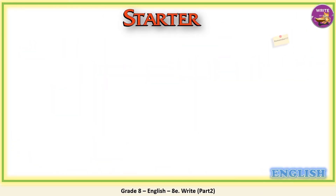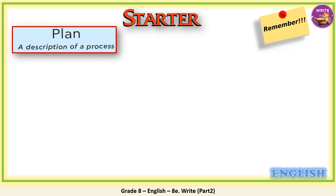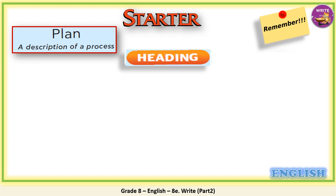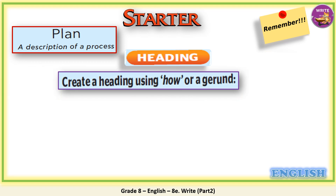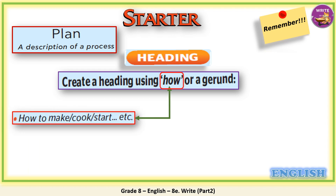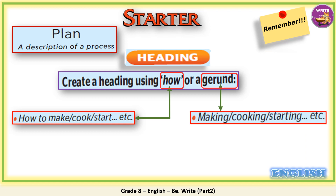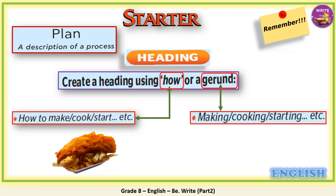Let's start with the starter. Remember, writing a plan about the description of a process. The first thing is the heading. Create a heading using 'how' or a gerund. When we use 'how', we can write: how to make a cake, how to cook rice, how to start a project. Or we can use the gerund: making a cake, cooking rice, or starting a project. For example: how to cook fish and chips, how to repair a scratched CD, or cooking fish and chips, or repairing a scratched CD.